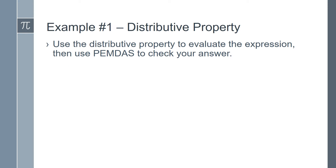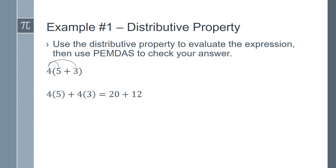Example number 1: Use the distributive property to evaluate the expression, then use PEMDAS to check your answer. We will use the expression 4 times (5 plus 3). The distributive property tells us to start by multiplying 4 times 5 and then 4 times 3. So we have the expression 4 times 5 plus 4 times 3, which equals 20 plus 12. 20 plus 12 equals 32, so 4 times (5 plus 3) equals 32.